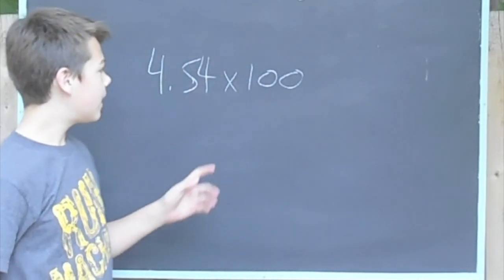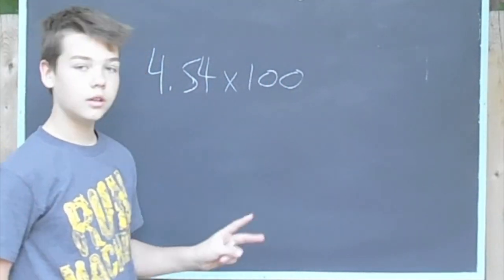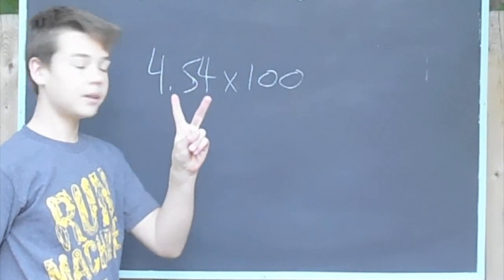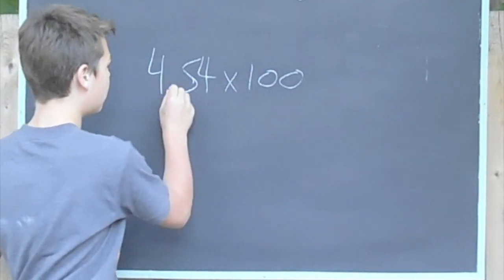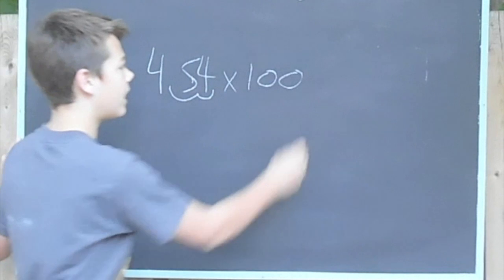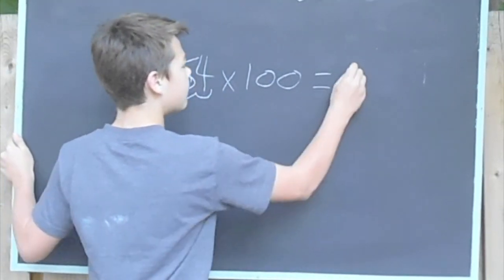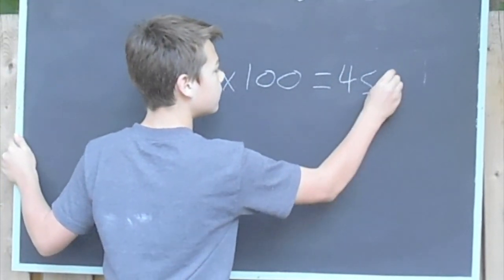Look at our multiplier. Count the zeros. 1, 2. 2 is the number of places we're going to move our decimal. 1, 2. So, our answer will be 454.